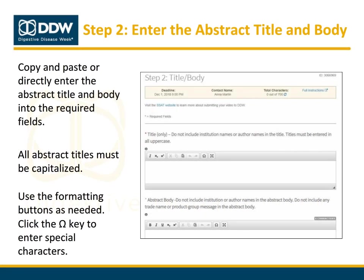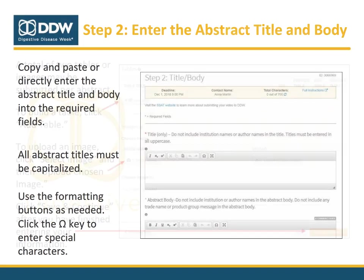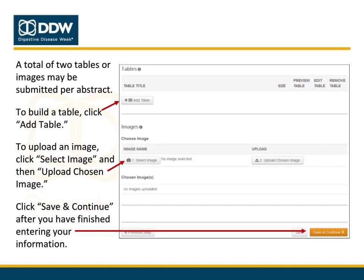The next step is to enter your abstract's title and body. You may copy and paste from your word processing software or enter the information directly. Abstract titles must be capitalized, but you can still use superscript, subscript, and special characters. To add special characters, click the Omega button. To submit a table or image, scroll to the bottom of the page. Up to two tables or images may be submitted per abstract. You may build a table by clicking Add Table.